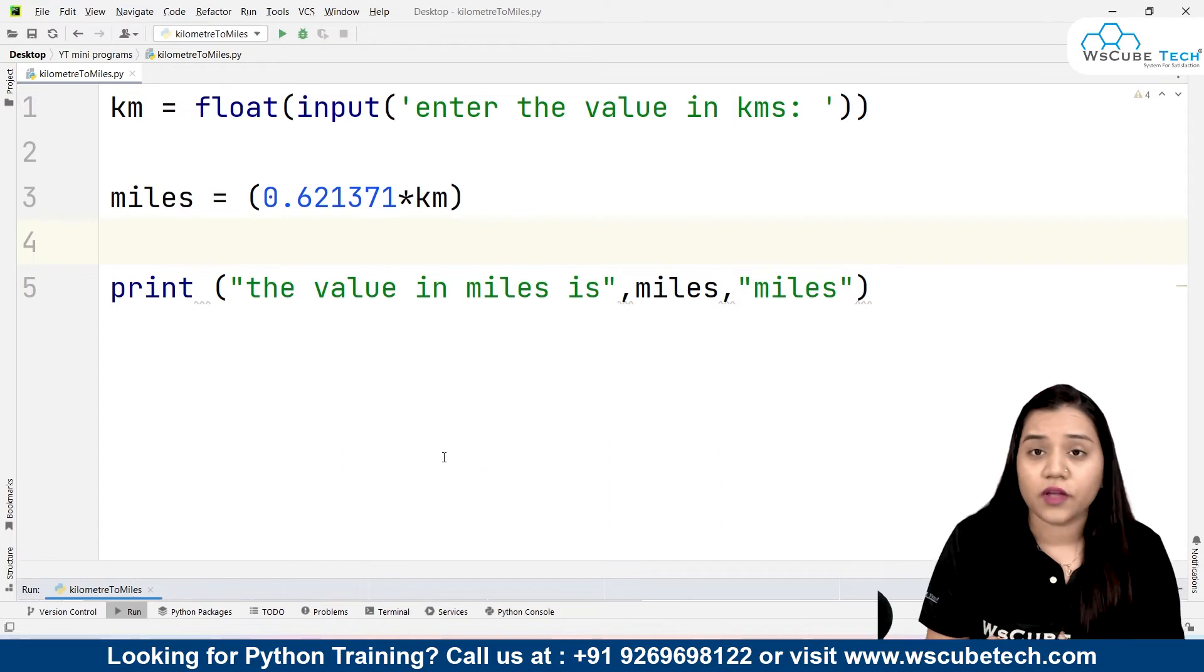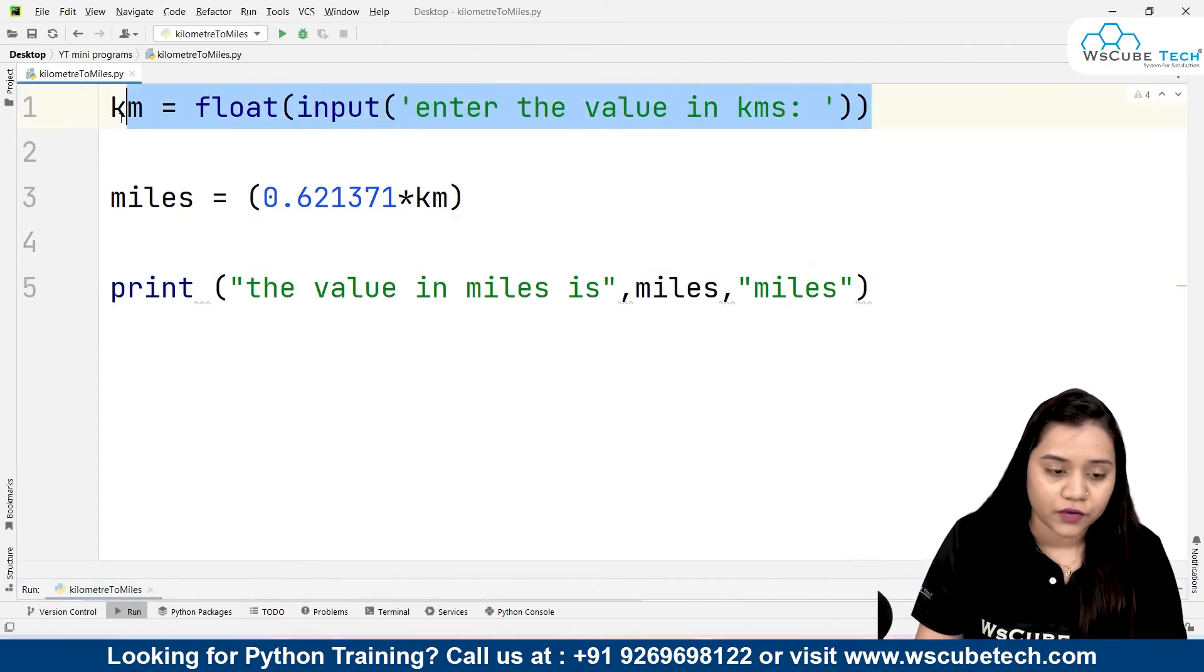This is how we have written our program. All we need to do is first create a variable where we can take the input from the user, or we can write a predefined variable. If you don't want to take an input from the user, all you can do is—I'll put it inside the comments—and I'll write km equals 10, maybe.